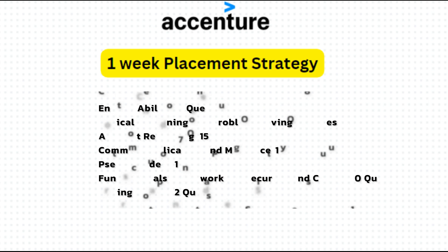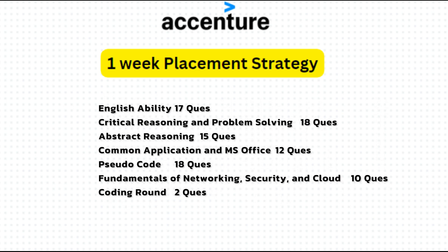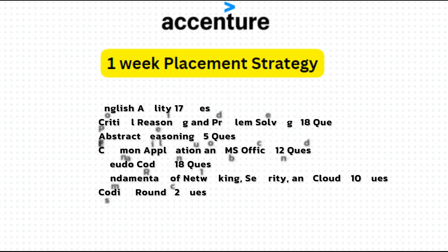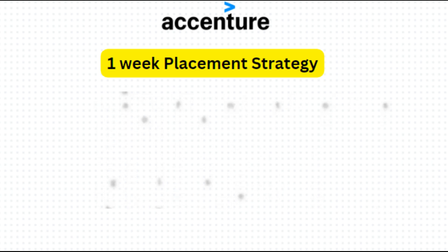As you all know the exam pattern: English ability has 17 questions, critical reasoning and problem solving has 18 questions, abstract reasoning has 15 questions, common application and MS Office has 12 questions, pseudo code has 18 questions, fundamentals of networking, security, and cloud has 10 questions. From the coding round you will have two questions — one basic and one advanced — and you will be given a total of 90 minutes.